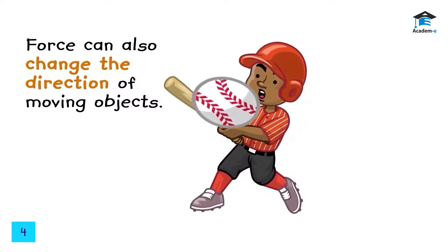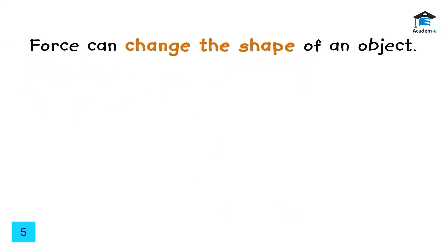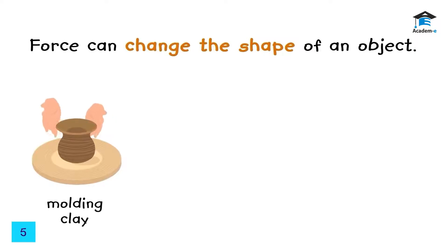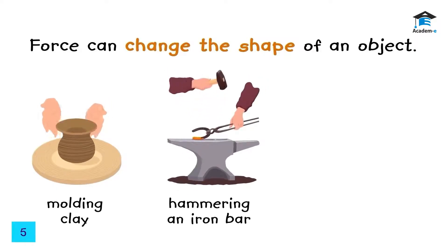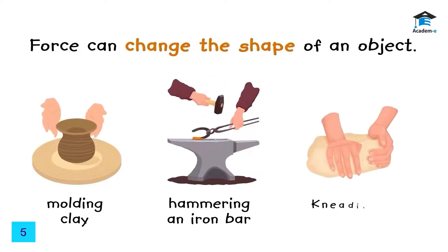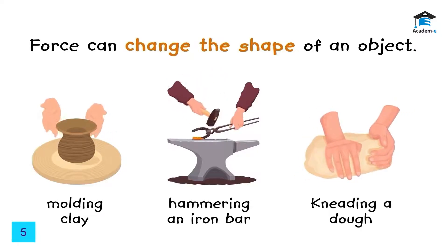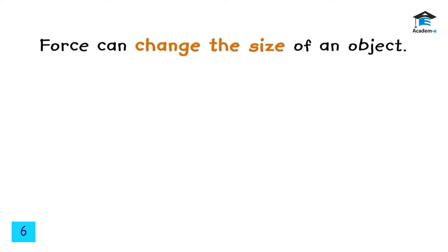Force can change the shape of an object. Applying force to an object may change the object's shape. For example, force is applied when molding clay. Another example is the hammering done on an iron bar. A baker needing dough applies force and changes the shape of the dough.